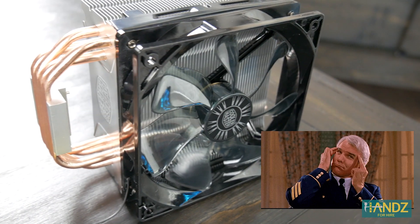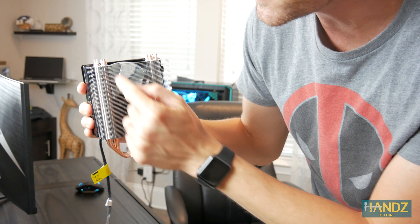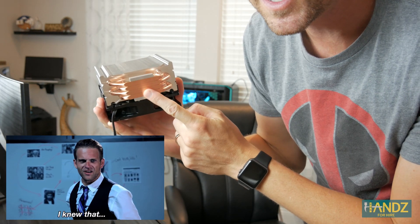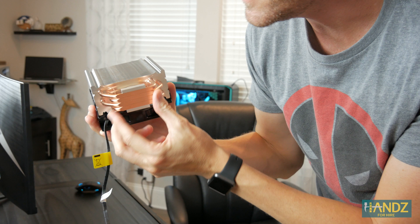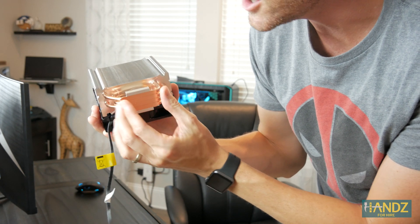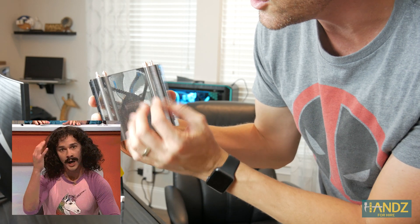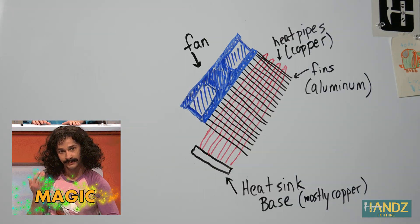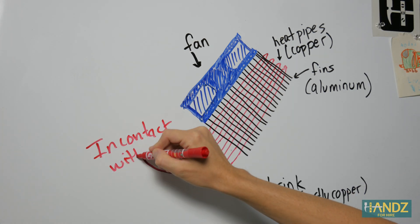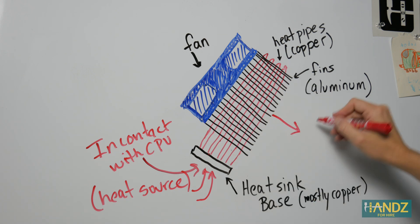Can you guess where the conduction is? If you guessed here, at these heat pipes where they touch the aluminum fins, you're correct. The heat sink base is in direct contact with the CPU, and this is where the heat originally leaves the CPU and travels into these heat pipes, which then is dissipated into these aluminum fins. As heat bleeds off the aluminum fins, this is where convection comes in, because then the fan takes that hot air and moves it, transferring that heat out of the heat sink.